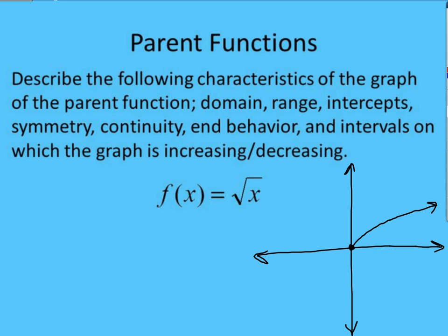So the first thing we need to do is describe the domain and the range. The domain, if you look towards the left, it starts at the value of x to 0, and it's going to increase going to the right. So our domain starts at 0, because that is a closed circle. We have the bracket there, and it's going to the right forever, so that's to infinity.